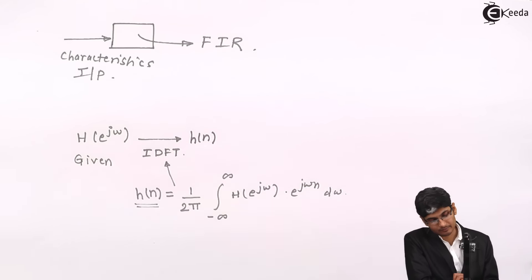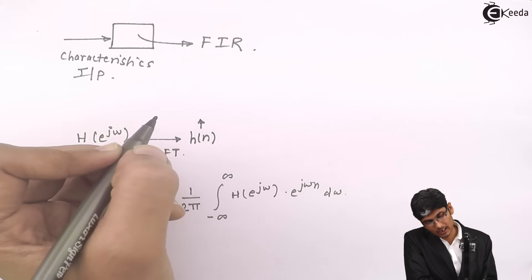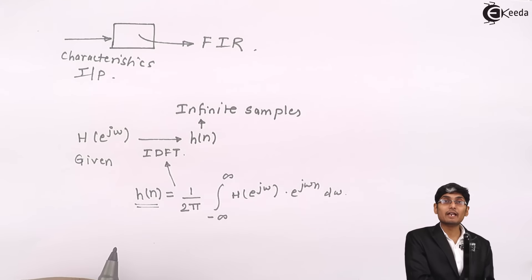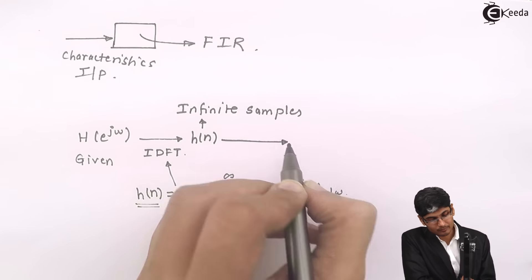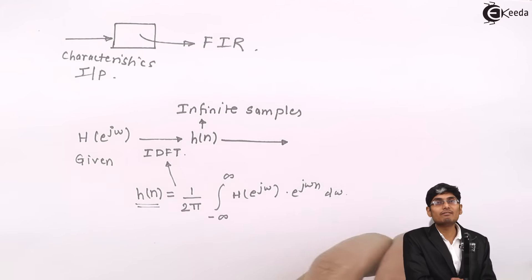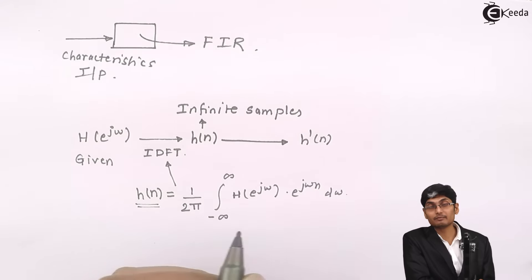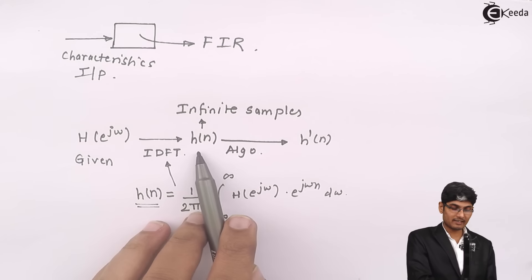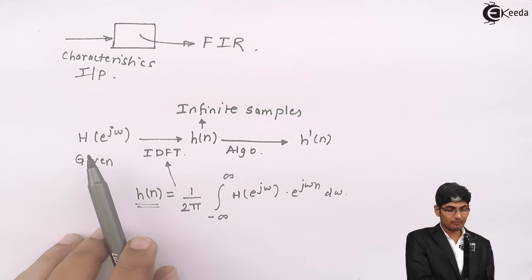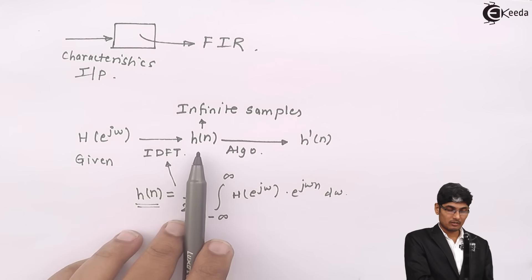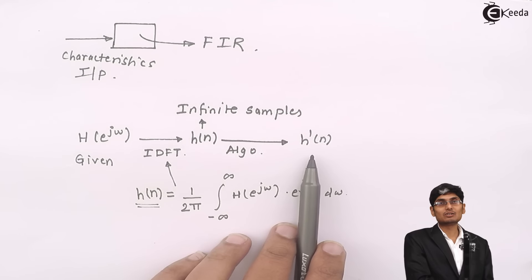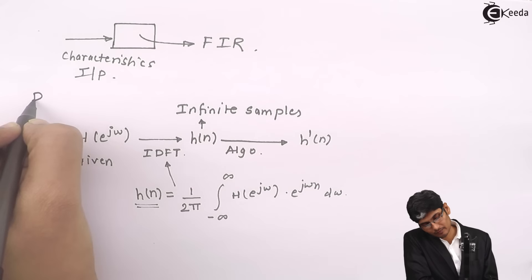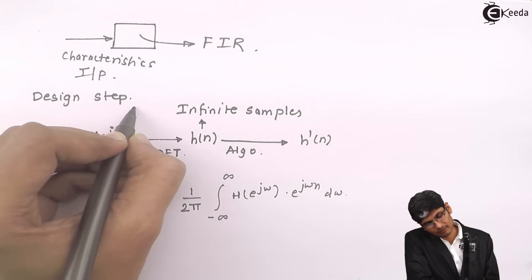The output of this will be H(n), but this H(n) will have infinite samples — there will be an infinite number of samples in this H(n). So, we will apply one more step: we will apply an algorithm to convert this infinite impulse response to a finite impulse response, which I call H'(n). We will be going from H(e^jω) to H(n) — which has infinite samples — and applying some algorithm, and we will get H'(n). This will be the basic technique used in designing an FIR filter; these are the design steps we will always be following in FIR filter design.